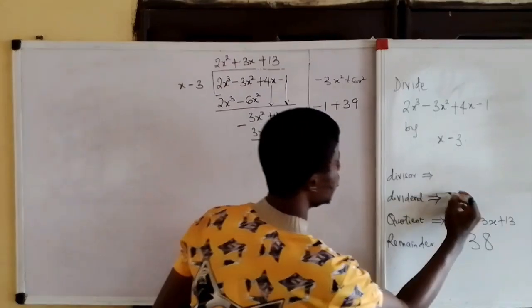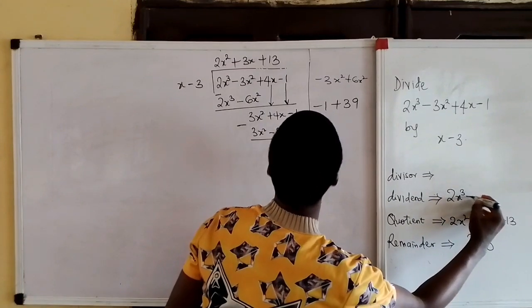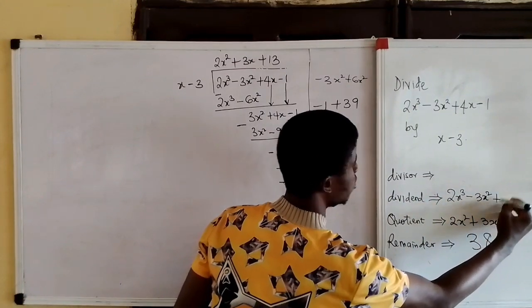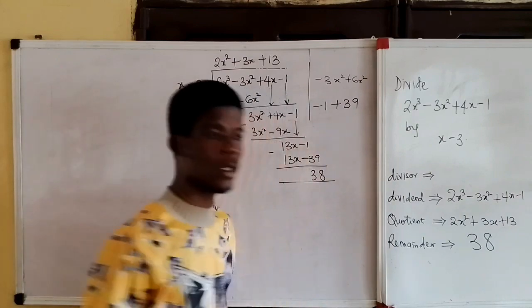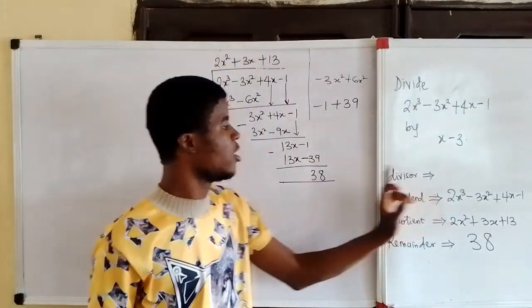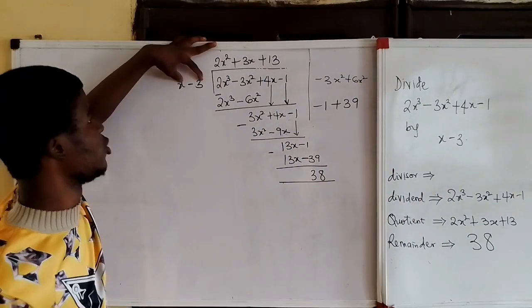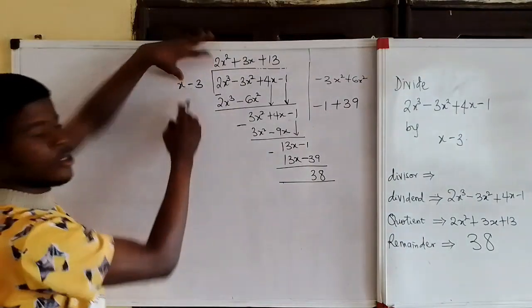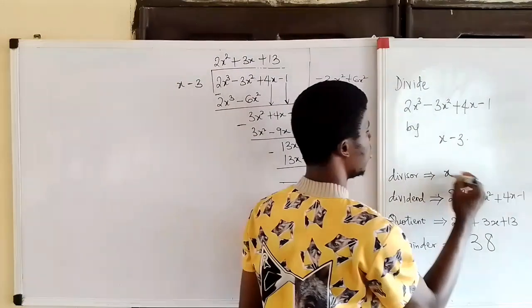2x cubed minus 3x squared plus 4x minus 1. And the divisor is the expression that we use to divide throughout: x minus 3.